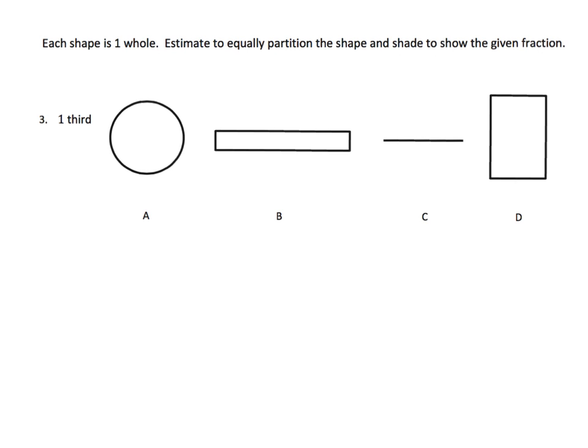So this says each shape counts as our whole, and then estimate to equally partition the shape to show the given fraction. So in this case, we're told we want to draw a third. All right, let's get the green. We need to cut this into thirds. So it's kind of like the Mercedes symbol. And then it says we're supposed to shade in one third. So there's our shade in for one third.